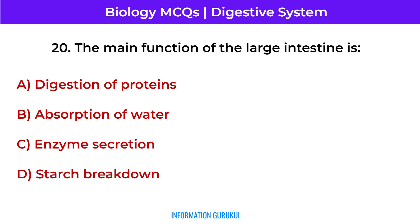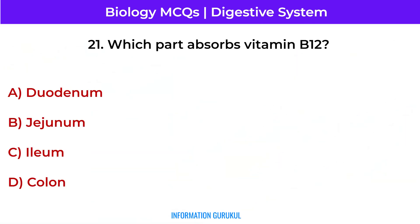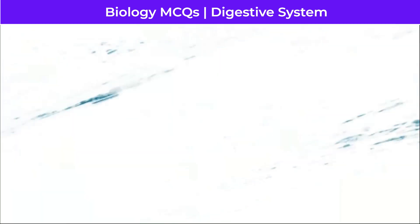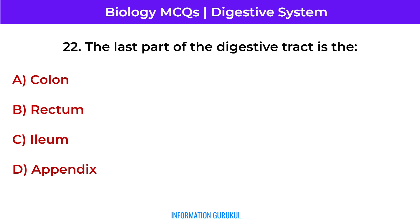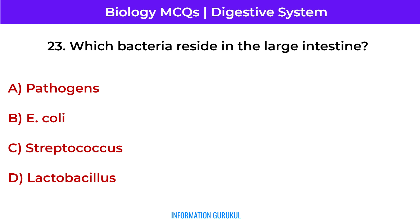The main function of the large intestine is absorption of water. Which part absorbs vitamin B12? The ileum. The last part of the digestive tract is the rectum. Which bacteria reside in the large intestine? E. coli.